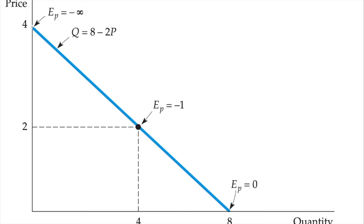Now let's consider the elasticity when price is 4. Since Ep = (ΔQ/ΔP) × (P/Q) and ΔQ/ΔP = −2, we have Ep = −2 × (P/Q). Let's calculate the elasticity at the point where price is 4 and quantity demanded is 0. Since anything divided by 0 is infinity, −2 × (4/0) is infinity.